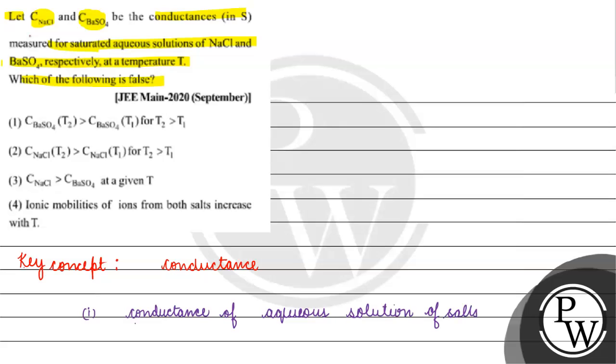Conductance increases with increase in temperature. Why? It is this way because we have ionic mobility increase in our ions. If we have ionic mobility increase in our ions, this is why we have conductance increase.